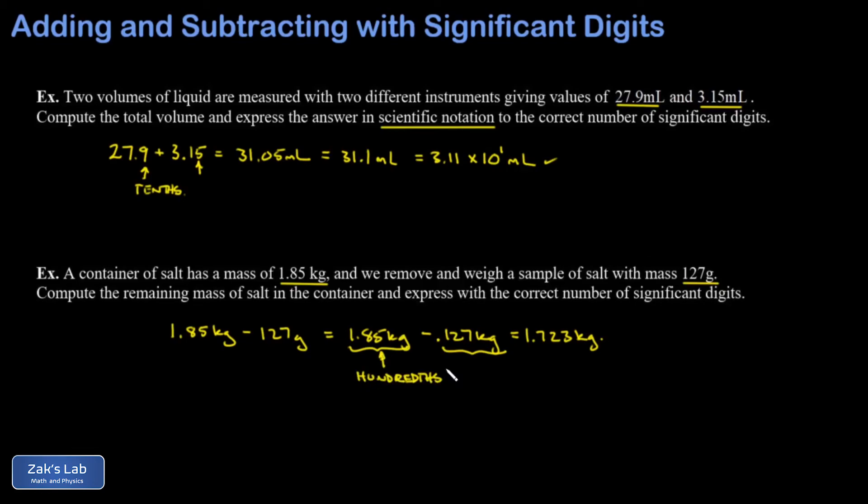If there's uncertainty in the hundredths place, then certainly we aren't going to express an answer to the thousandths place. That's the reasoning behind these rules. I round my answer off to the hundredths place and I get 1.72 kilograms.